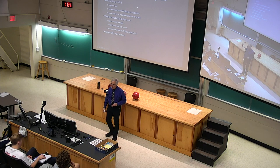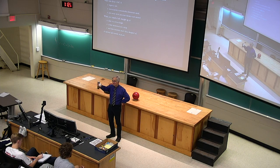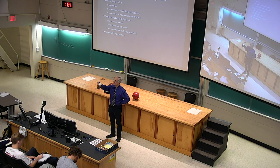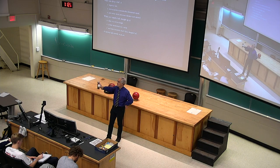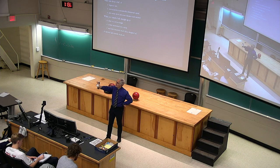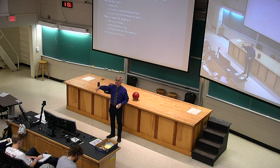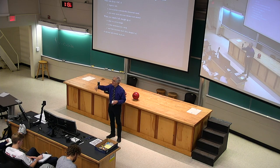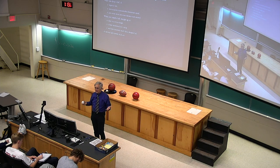Some observations about falling balls. If you drop it from rest — meaning you start with it motionless and let go — it starts with velocity zero. Right now it's not going anywhere. When you let go of it, it acquires more and more downward velocity. It's going faster and faster in the downward direction — its velocity goes from zero to a little bit downward to a lot downward and so on.